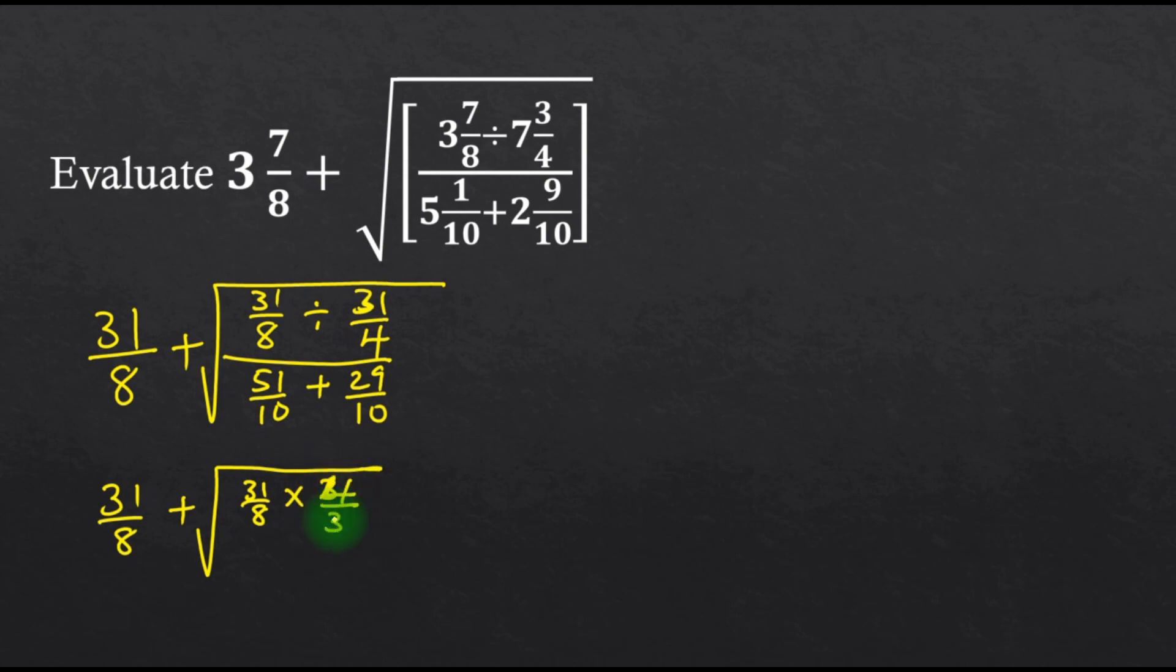Here we have the same denominator, therefore in addition we just add the numerators directly. That will be 51 plus 29, and that is 80.